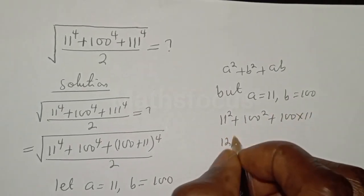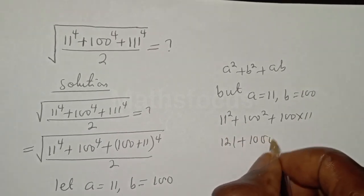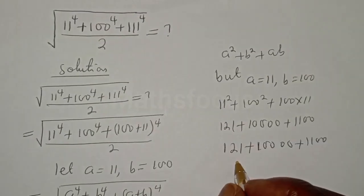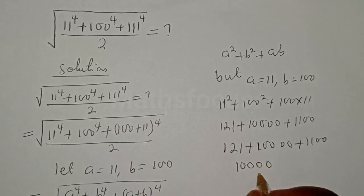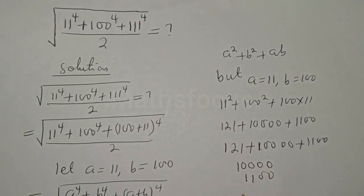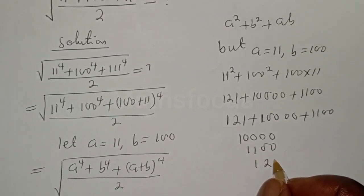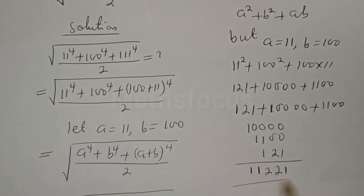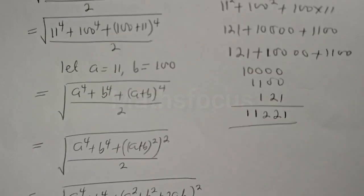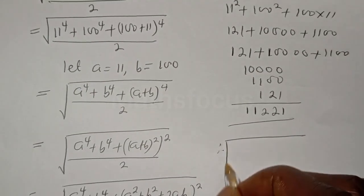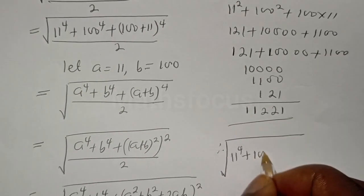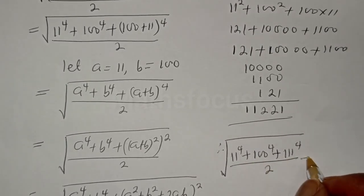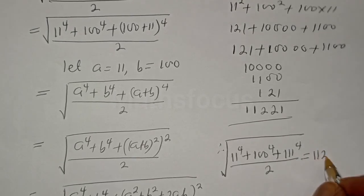Now computing: 11 squared is 121, plus 100 squared is 10,000, plus 11 times 100 is 1,100. Adding everything together: 10,000 plus 1,100 plus 121 equals 11,221. Therefore, the square root of (11⁴ plus 100⁴ plus 111⁴) over 2 is equal to 11,221.